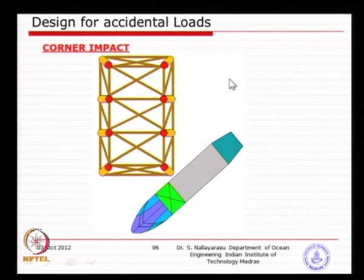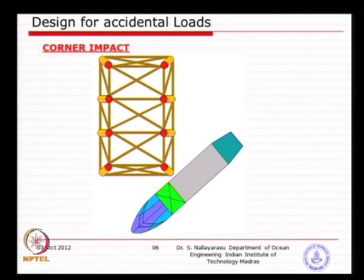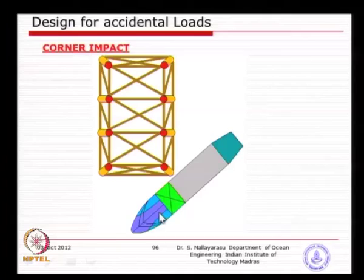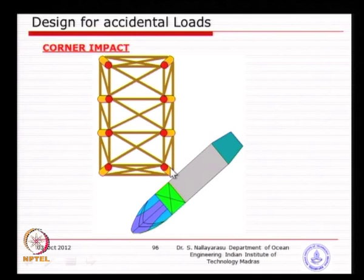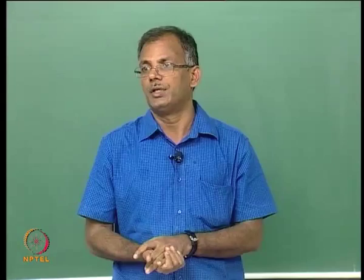Several types of impacts are expected. For example, a drifting vessel with engine failure in deteriorating environmental conditions can hit in an uncontrolled manner — the vessel may strike a corner of the structure, impacting a leg. This is a corner impact. We need to evaluate whether the structure remains stable if a leg is damaged. We identify all scenarios and select the critical ones to evaluate structural strength in terms of energy absorption.